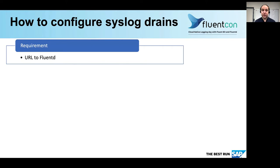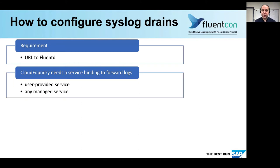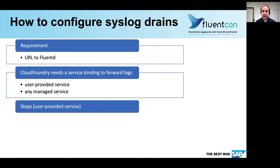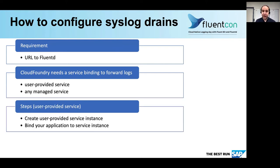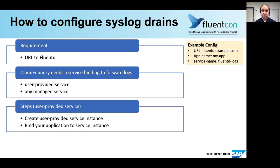We assume that Fluentd is already running and we know the URL to Fluentd. What we now need is a service binding to forward the logs. That can be a service binding to a user provided service, which we will use here, or any other managed service. The steps are first to register and create a user provided service, and then bind our application to that service instance. We say Fluentd is running at the URL fluentd.example.com and we have an application running on Cloud Foundry by the name of my app. We will create a service with the name Fluentd logs.